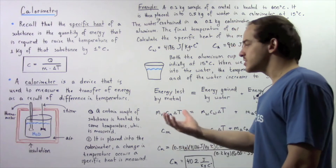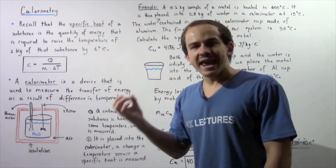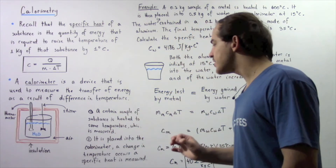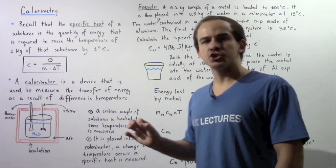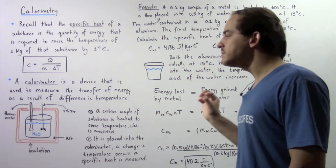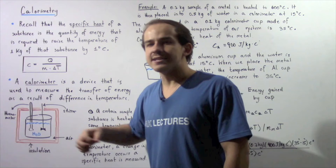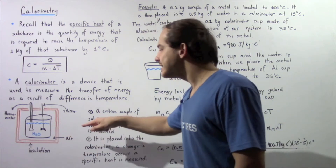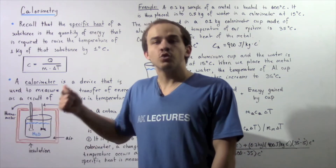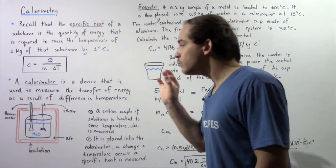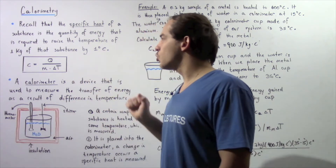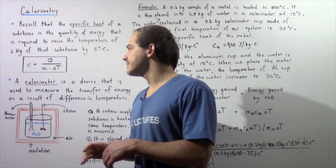How exactly does it work? We take a sample of a substance whose specific heat we want to measure and heat it to some known temperature. We then place that substance into the liquid, the liquid increases in temperature, we measure that change in temperature, and use the specific heat equation to calculate the specific heat.